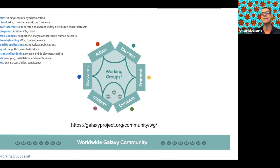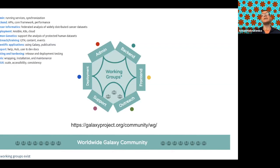Each working group establishes a set of goals per quarter with deliverables achieved by the end of each quarter cycle. We're doing this for the first time, and in general our idea is to change how the global Galaxy project is governed. We'll have more news on how this working group structure integrates with the community at large — how we make sure our grand goals are satisfied while also developing what the community wants.